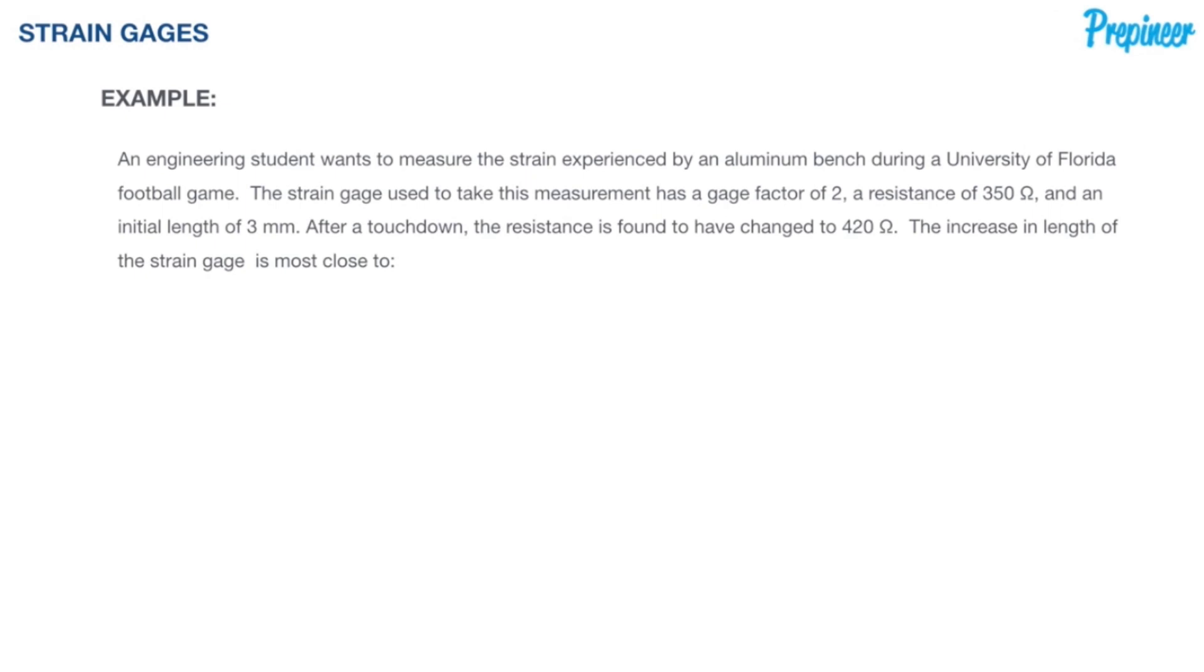An engineering student wants to measure the strain experienced by an aluminum bench during a University of Florida football game. The strain gauge used to take this measurement has a gauge factor of two, a resistance of 350 ohms, an initial length of three millimeters. After a touchdown, the resistance is found to have changed to 420 ohms. The increase in length of the strain gauge is most close to what?